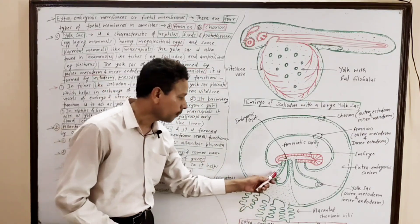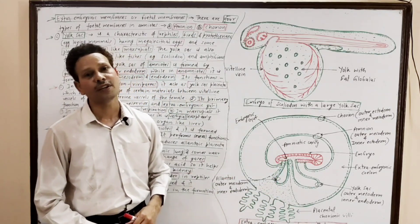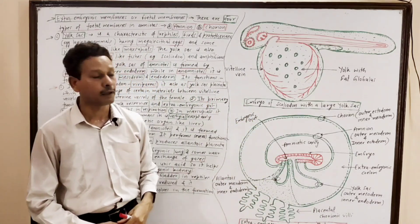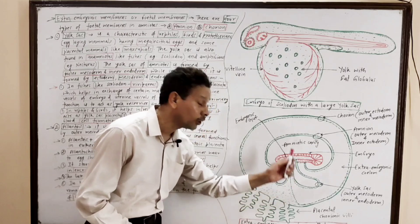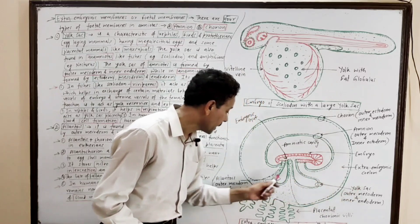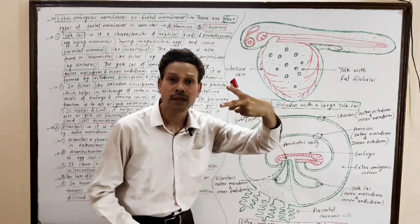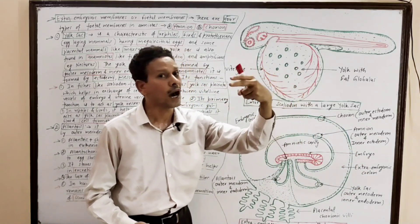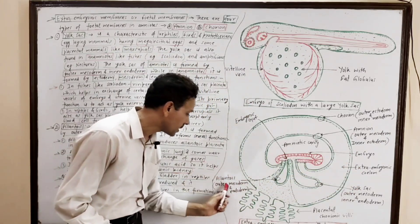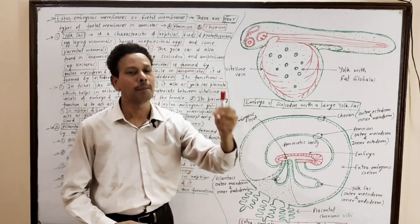In case of reptiles, the allantois involves in excretion — it acts as an extra embryonic kidney, and its basal part acts as a urinary bladder. In case of human beings, both yolk sac and allantois are non-functional and greatly reduced. The yolk sac acts as hemopoietic tissue in early stages of the embryo, acting like a liver, while the allantois involves in furnishing the blood vessels of the placenta.